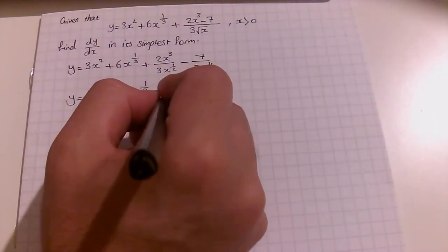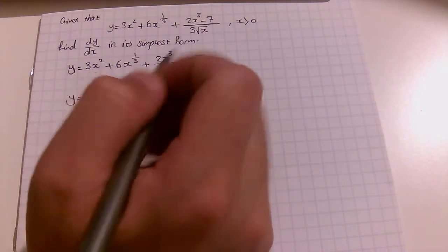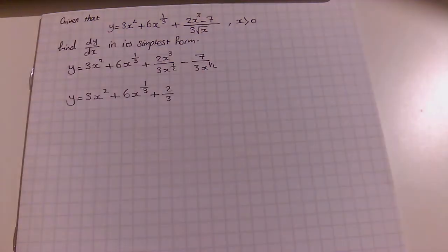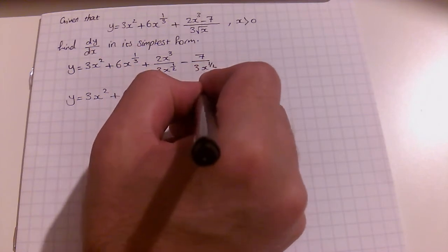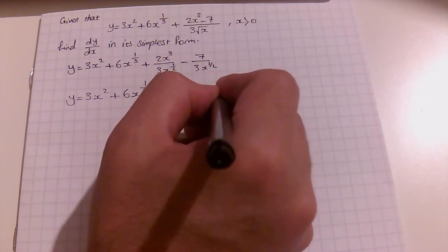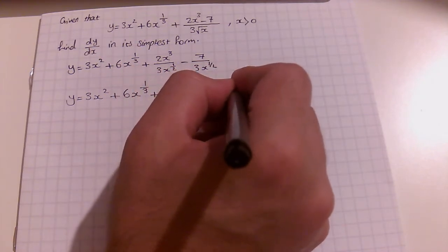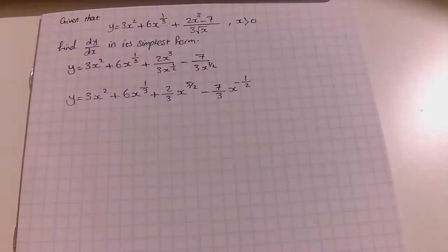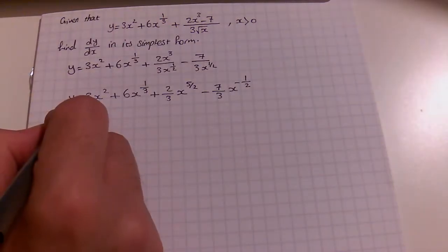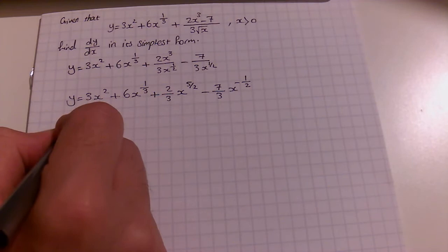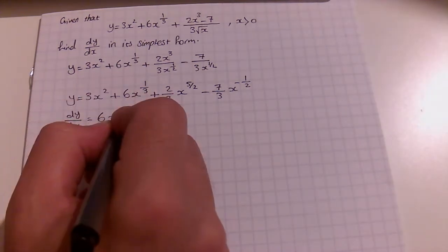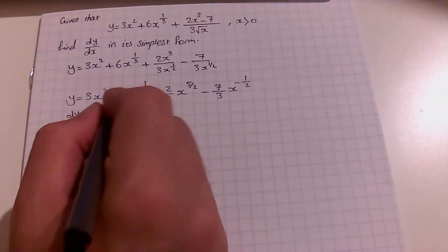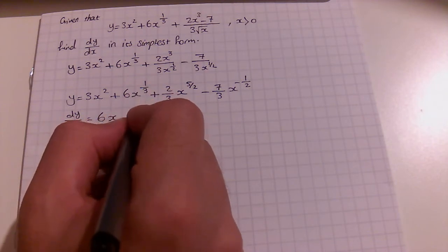We can simplify even further: 3x squared plus 6x to the one third, plus two thirds x to the 3 divided by x to the half, which gives x to the 5 over 2, minus 7 over 3 times x to the minus half.